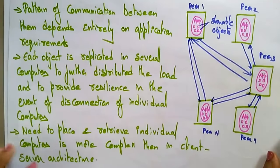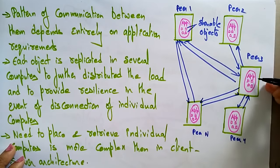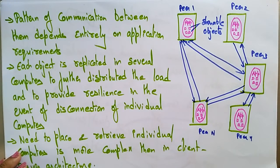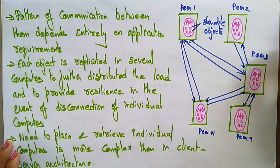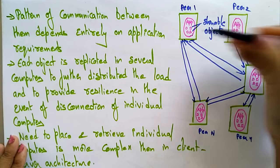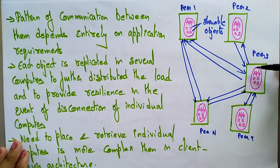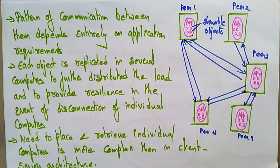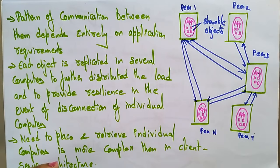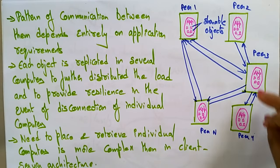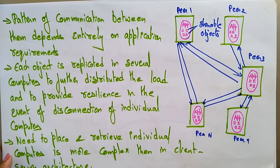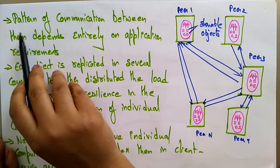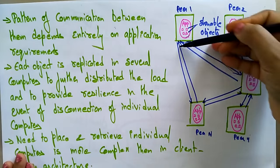Let me show you the architecture of the peer-to-peer model. Peer 1, Peer 2 — different systems are present in the network. Each system has its own applications, and those applications have objects. Those objects can be shareable. For example, Peer 1's objects can be shared by Peer 3, and Peer 3 can share objects with Peer 4 or Peer 2. Whenever a system is sharing, it becomes a server, and the other becomes a client.